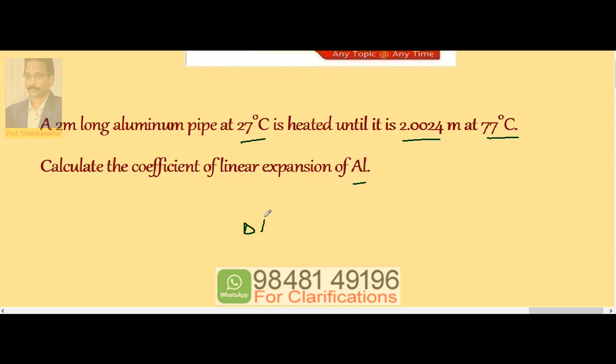We know that expansion is equal to L alpha delta T. Here delta L difference between these two, 2.0024 and 2, so it is 0.0024.